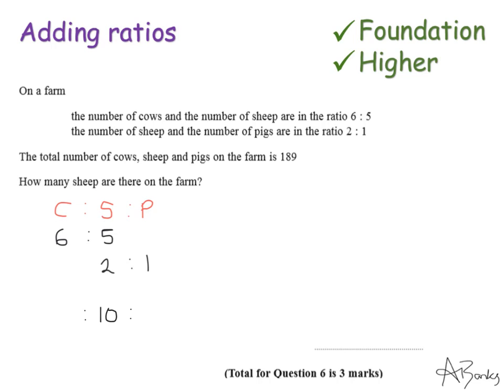So to get from the 2 to 1 to 10 to something, I'm multiplying by 5. 2 multiplied by 5 gives me the 10. Which means my 1 is going to become a 5.